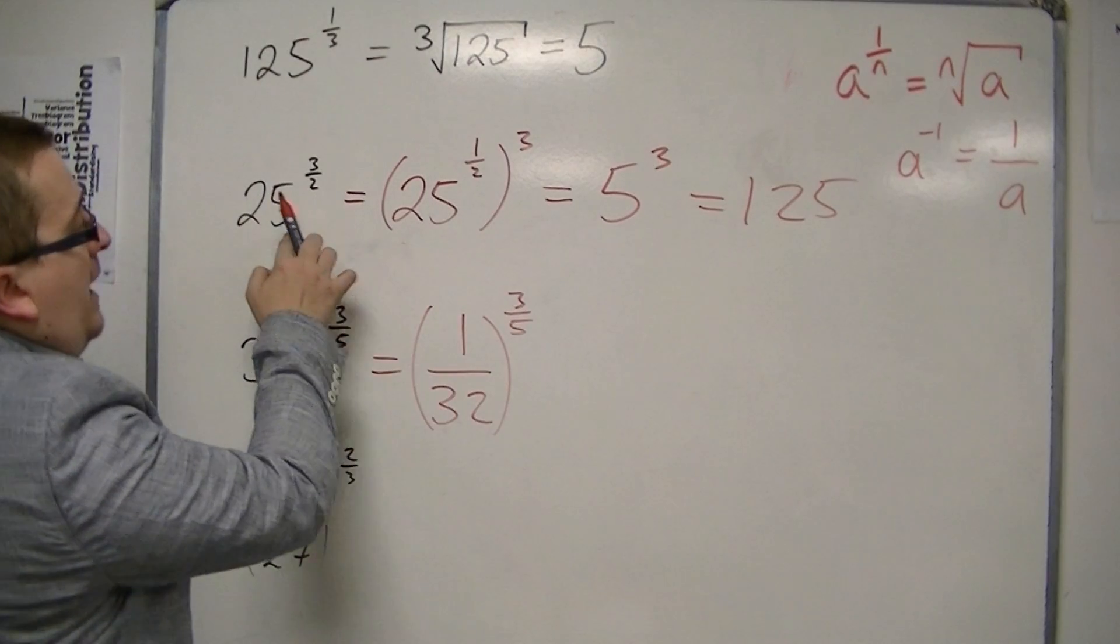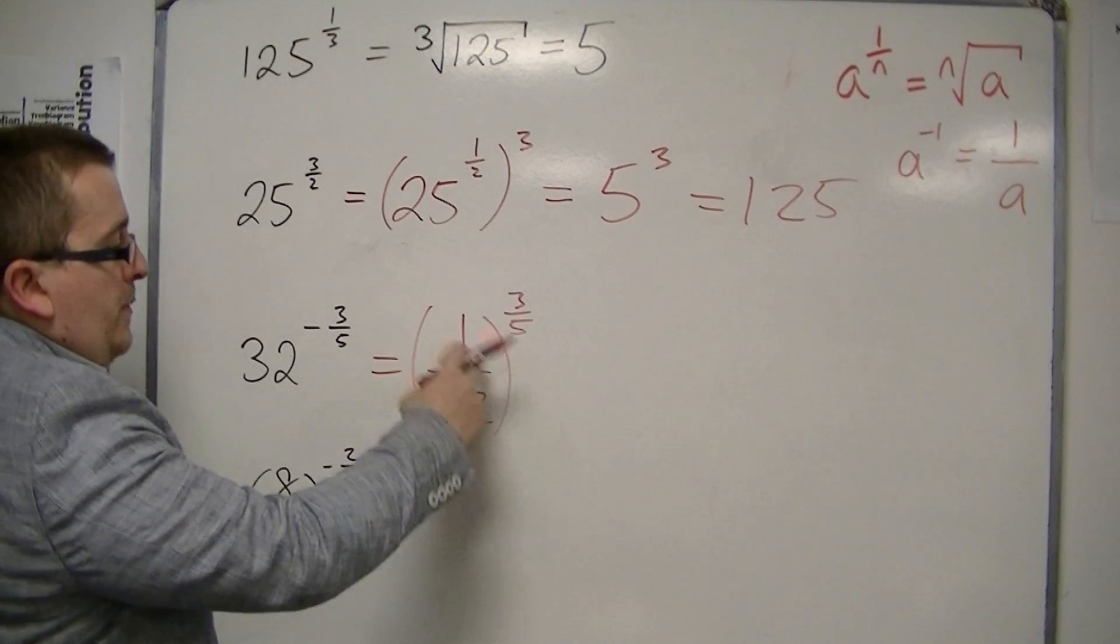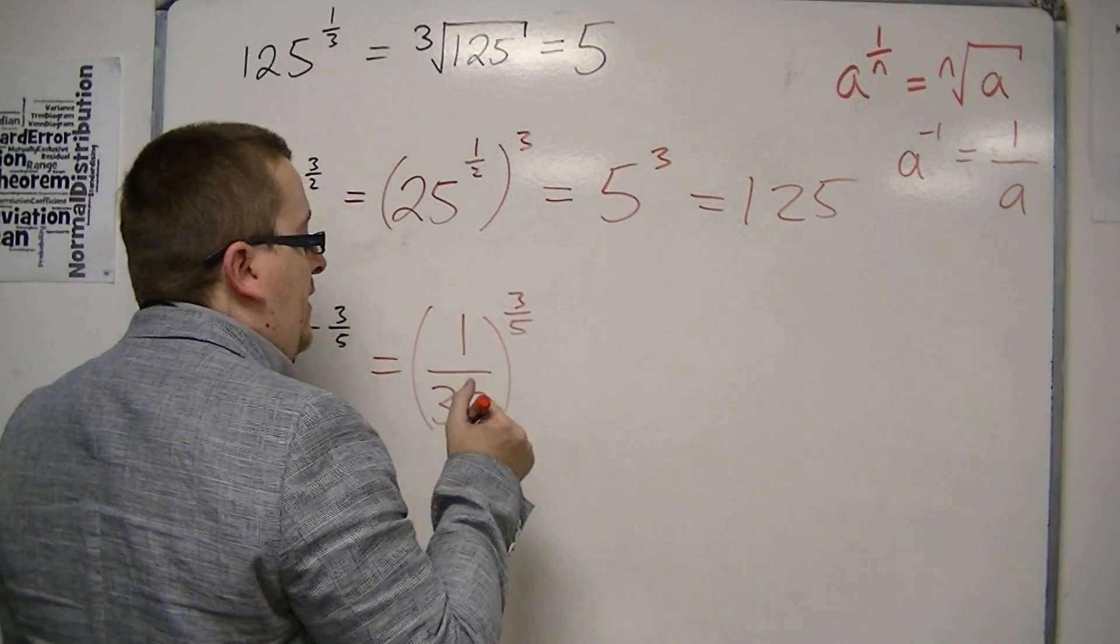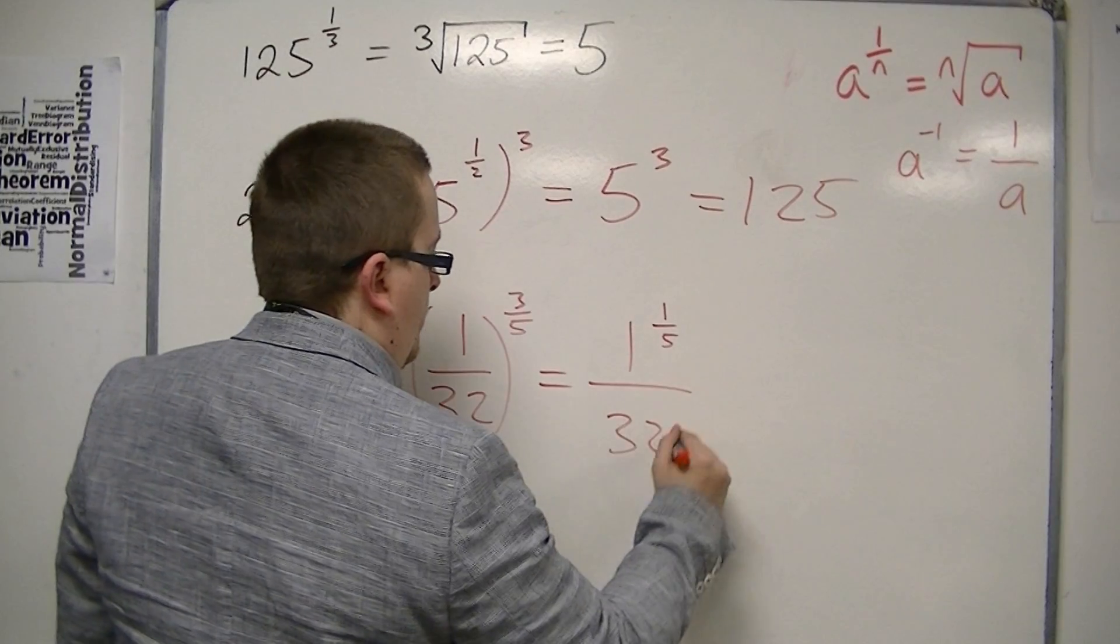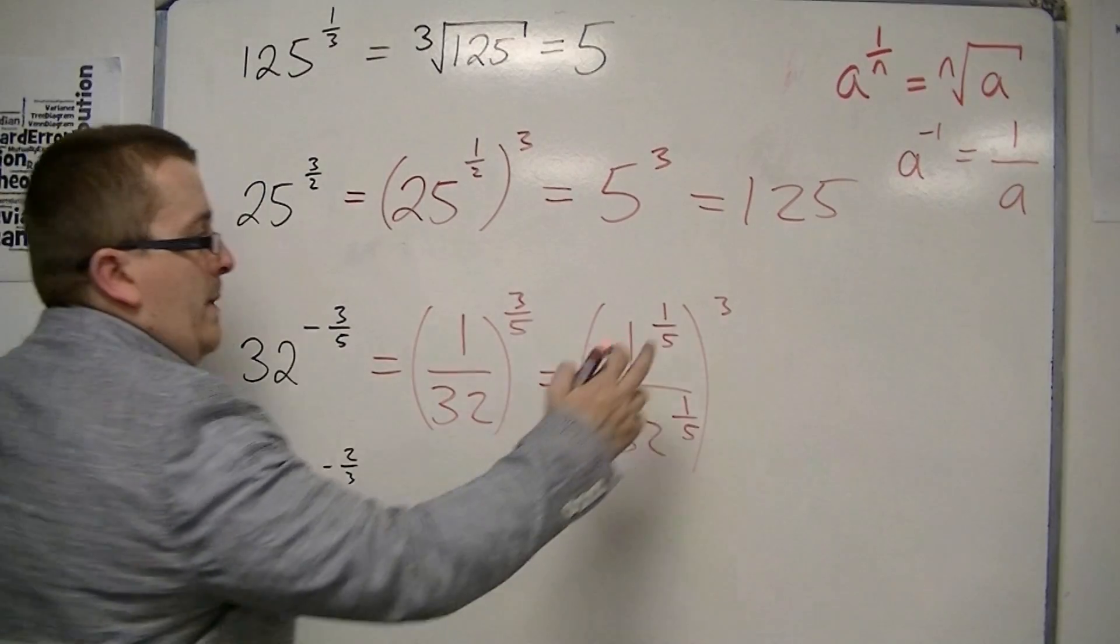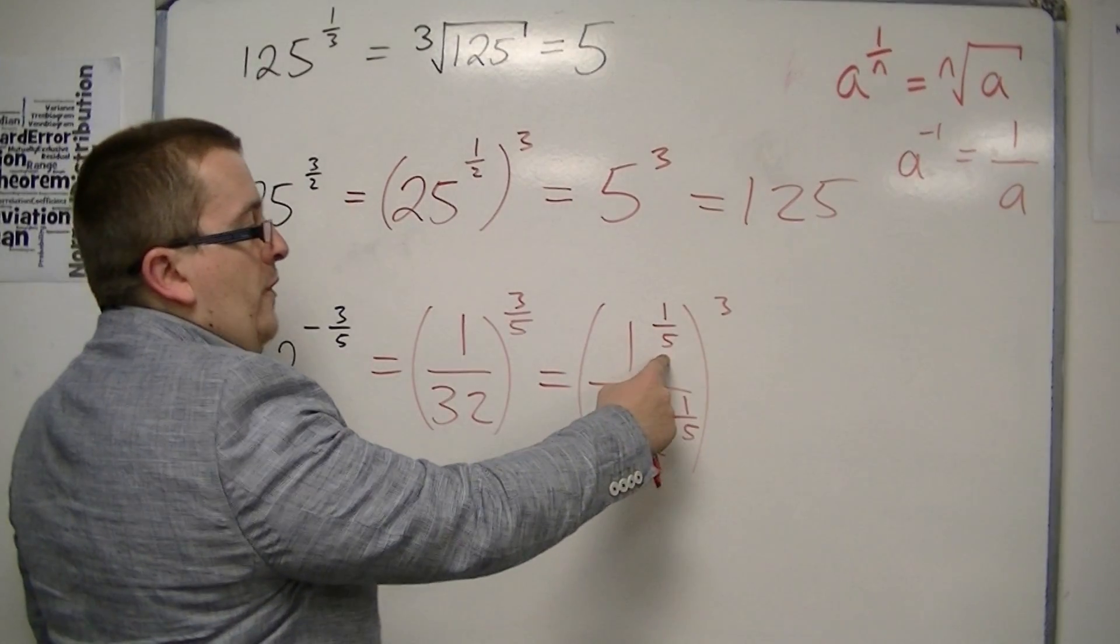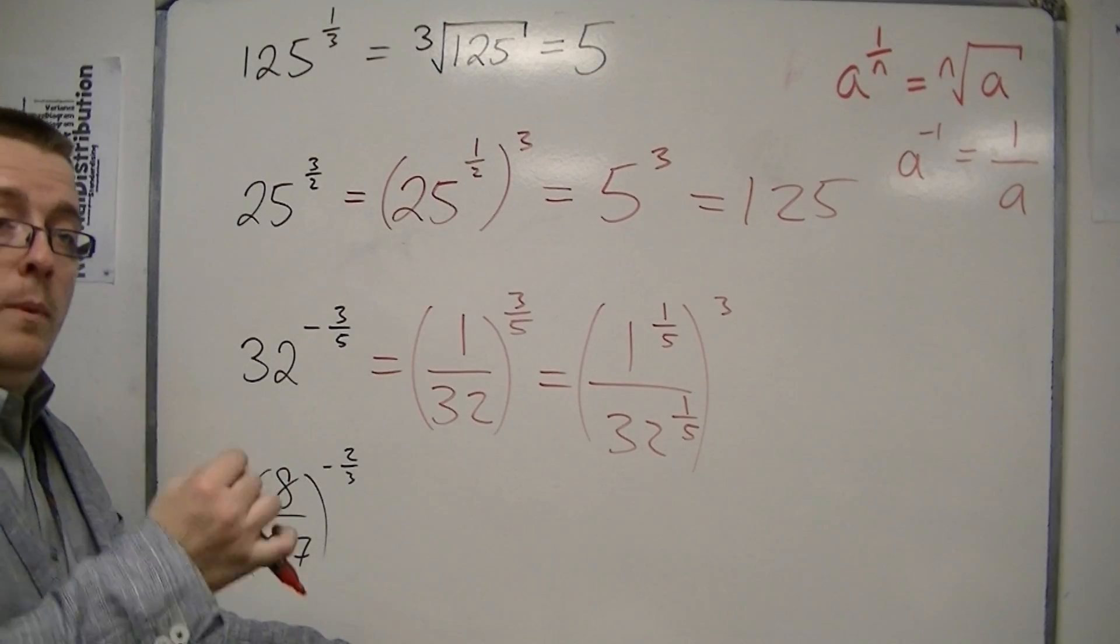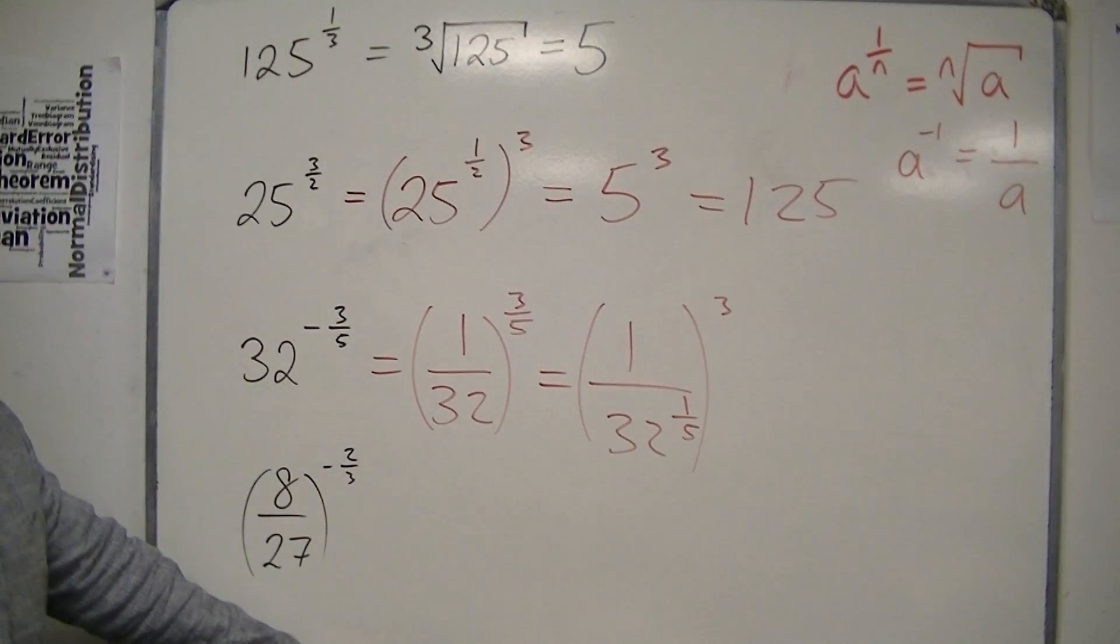We've got a similar problem to the previous problem. I could either cube this first or find the fifth root first, and it's probably going to be easier to find the fifth root. So this is the fifth root of the top over the fifth root of the bottom, cubed, because 3 times 1 fifth is 3 fifths. I've put the 1 fifth here just to show you that you are doing the fifth root of the top and bottom, but we know that 1 to the 1 fifth is just going to be 1 anyway.